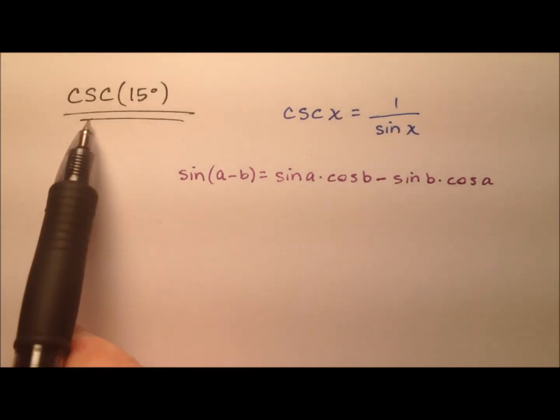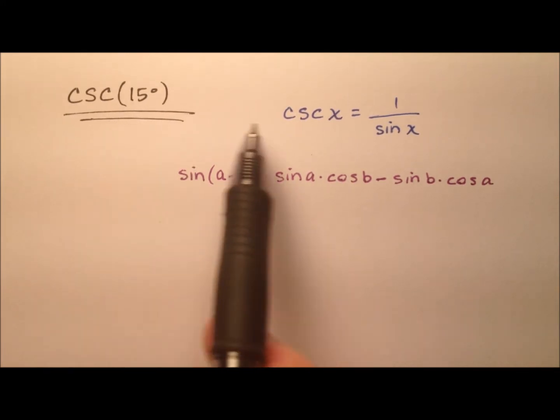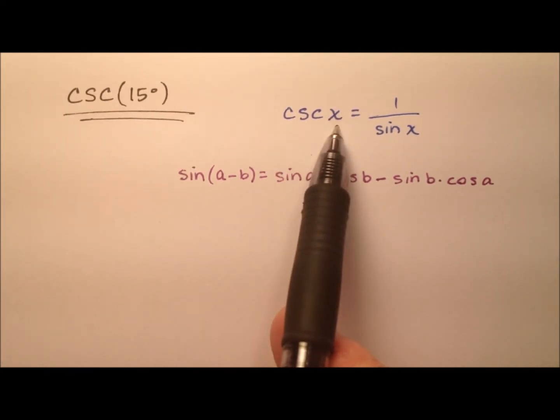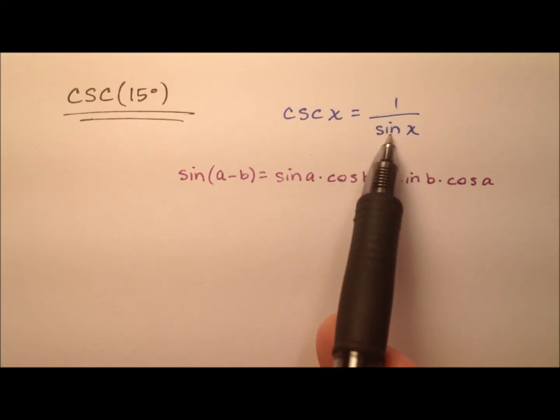In this video, we're going to find the exact value for the cosecant of 15 degrees. We know that cosecant is a reciprocal function because it's the reciprocal of sine x. It's 1 over sine x.